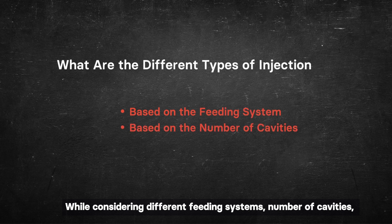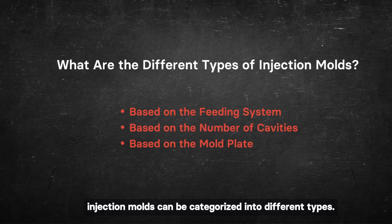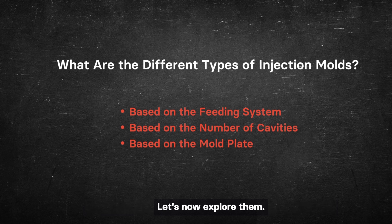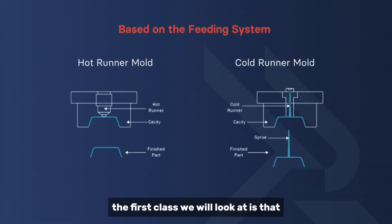While considering different feeding systems, number of cavities, and mold plate configurations, injection molds can be categorized into different types. Let's now explore them. The first class we will look at is that according to feeding system.